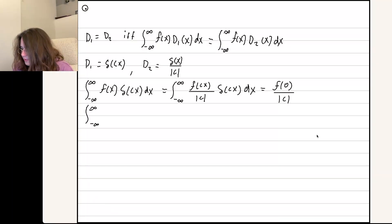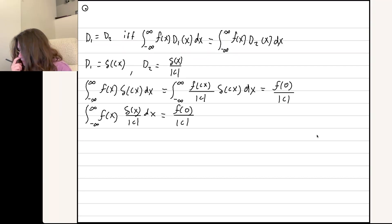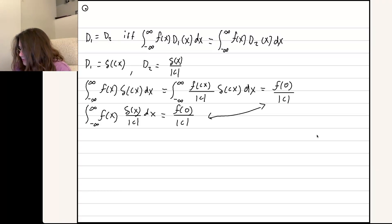Similarly, we take our other Dirac function — we have delta(x) over mod c already. So we just get the function at 0: you set x to 0, but then still carry through the mod c on the bottom. And these two results match. So we can definitely say that the delta function of cx is equal to the delta function of x divided by mod c.